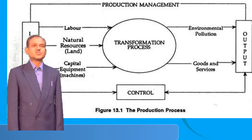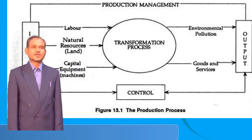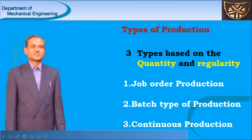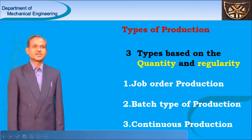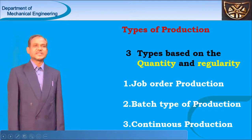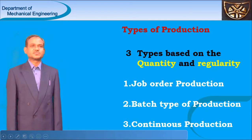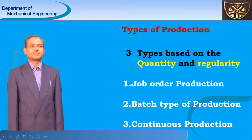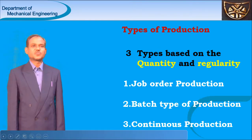Inputs are converted into outputs by using certain manufacturing methods. The manufacturing methods may be based on the quantity produced and based on the frequency of production. We can categorize manufacturing methods into three categories: first is job order production, second is batch type of production, and third is continuous type of production.